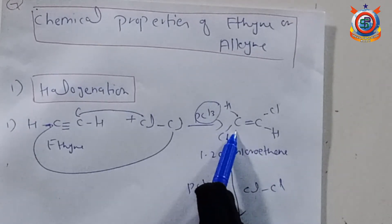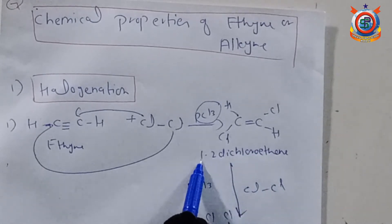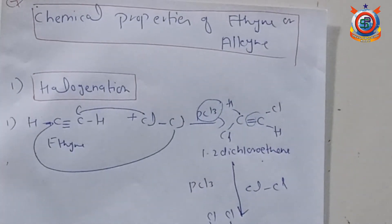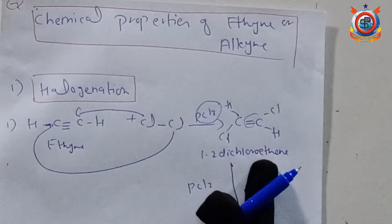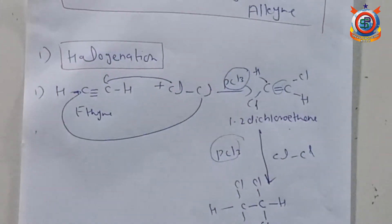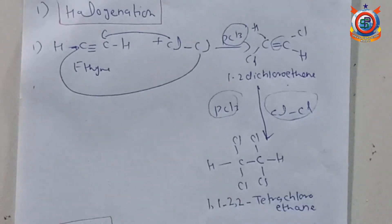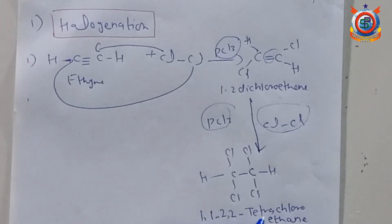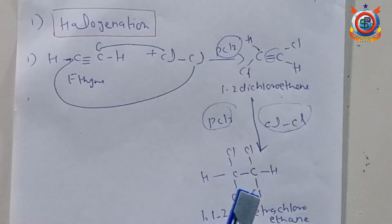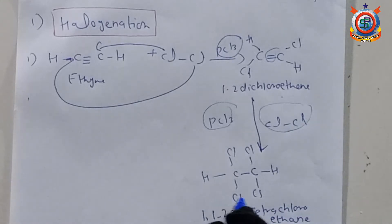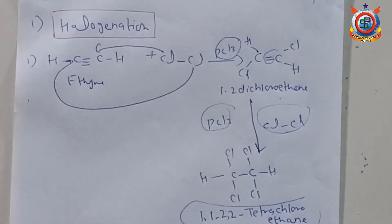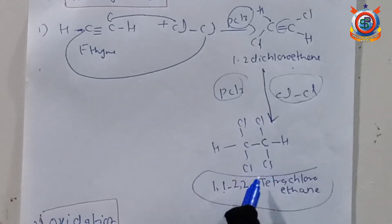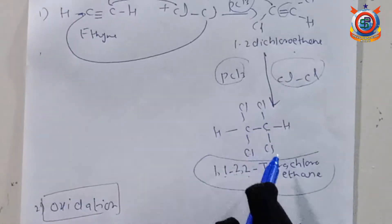One carbon bonds with a chlorine and the other carbon bonds with a chlorine, giving 1,2-dichloroethylene. It has a double bond, so it is ethylene. Then a second molecule of chlorine reacts with 1,2-dichloroethylene to give 1,1,2,2-tetrachloroethane — carbon number 1 with two chlorines (1,1) and carbon number 2 with two chlorines (2,2), giving four chlorines total: tetrachloro.